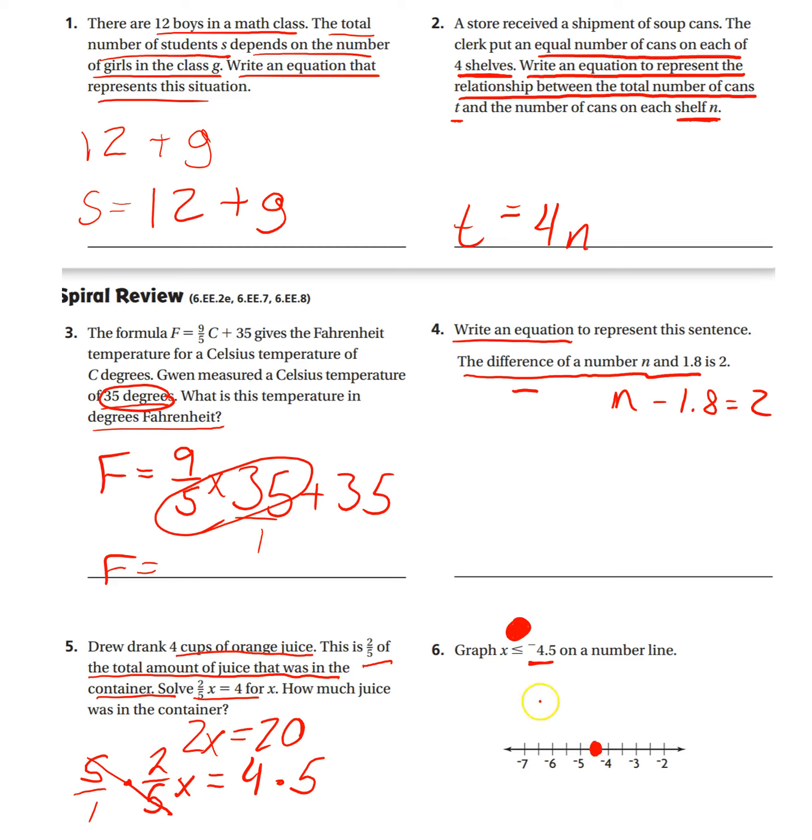And then X is, could be negative 4.5 or anything less than. Less than means I go left, so I shade this way with an arrow pointing saying it could go on forever.